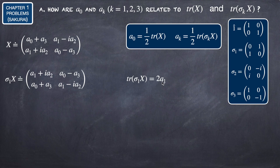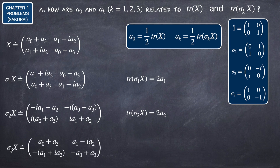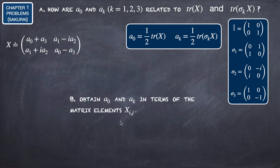If we do the same, multiplying sigma2 by X, we get a matrix whose trace — the minus i*A1 and i*A2 terms cancel — gives 2*A2. And when we calculate sigma3*X, summing the diagonal elements gives 2*A3. We have verified that the result is consistent when solving the problem using explicit matrices.